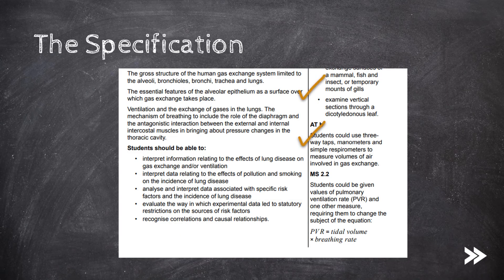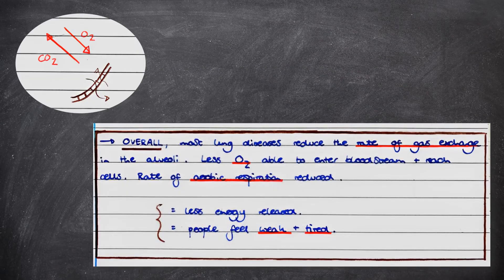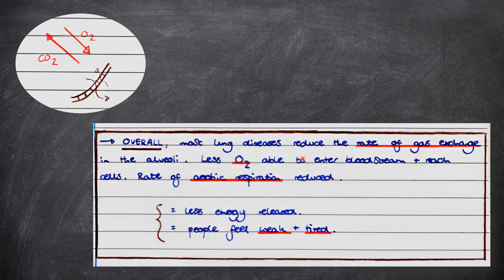Okay, so finally, the spec says we have to be able to interpret and evaluate information in relation to lung diseases. Therefore, I think it would be very useful to briefly consider what would happen if gas exchange were reduced for some reason, and how this would affect the organism as a whole. Overall, most lung diseases reduce the rate of gas exchange in the alveoli. Less oxygen is therefore able to enter the bloodstream and reach respiring cells. Therefore, the rate of aerobic respiration is reduced, meaning that less energy is released, and therefore people feel weak and tired.